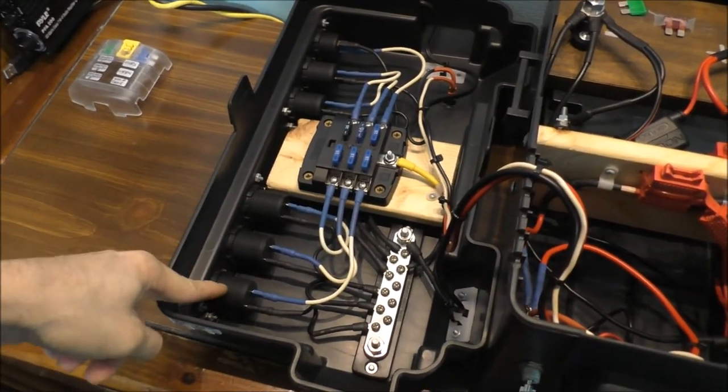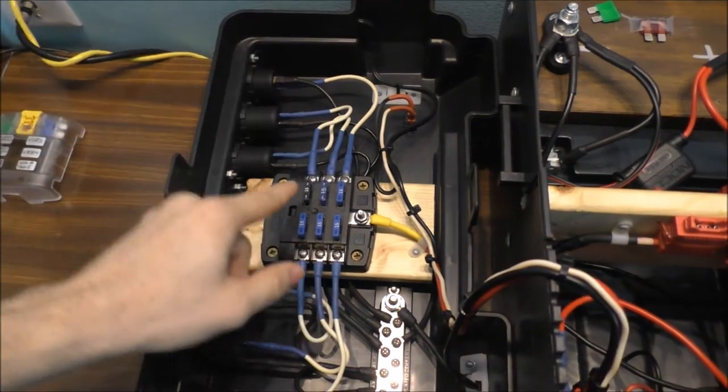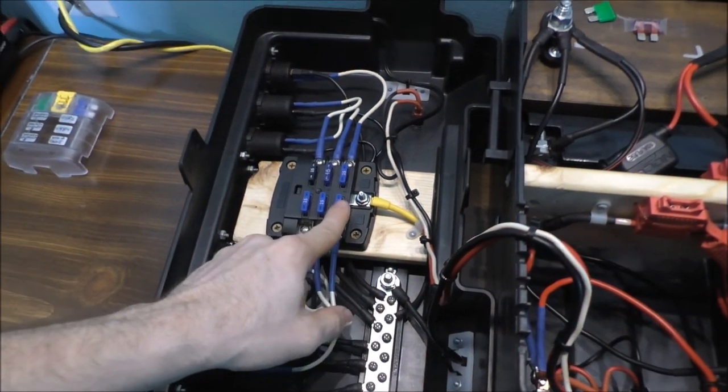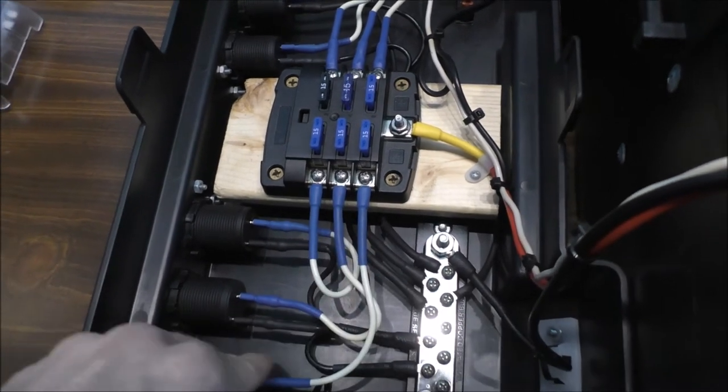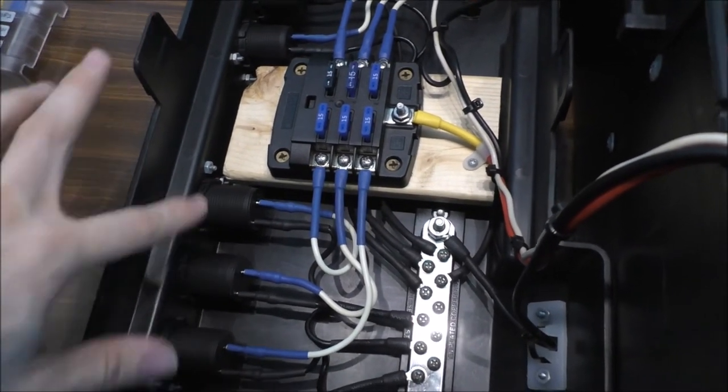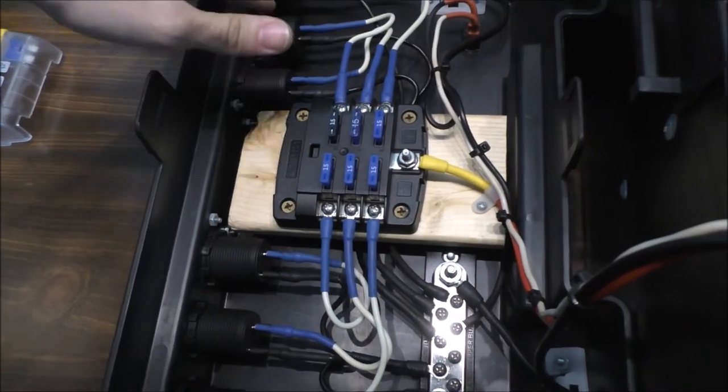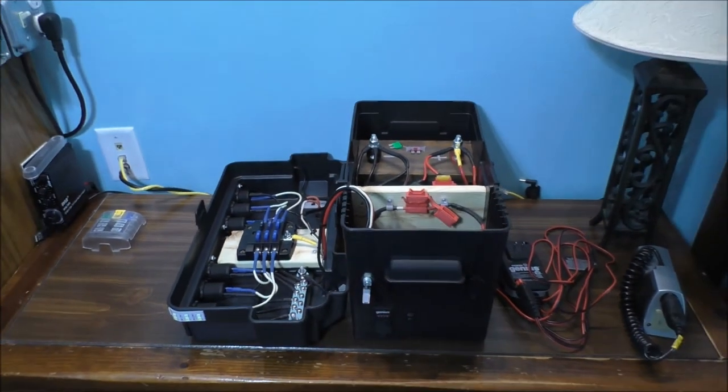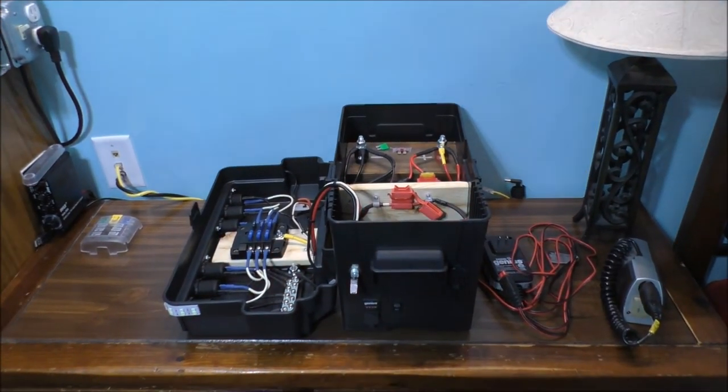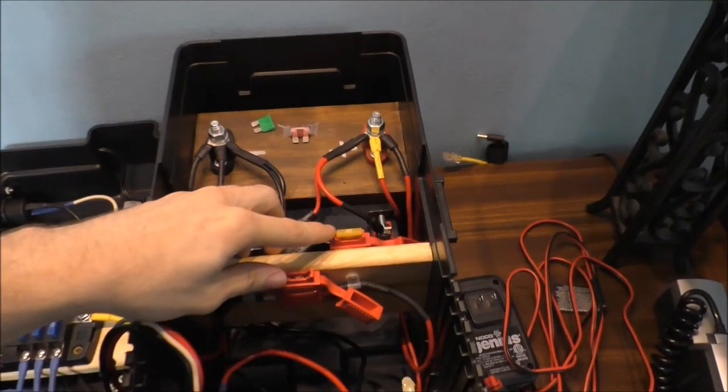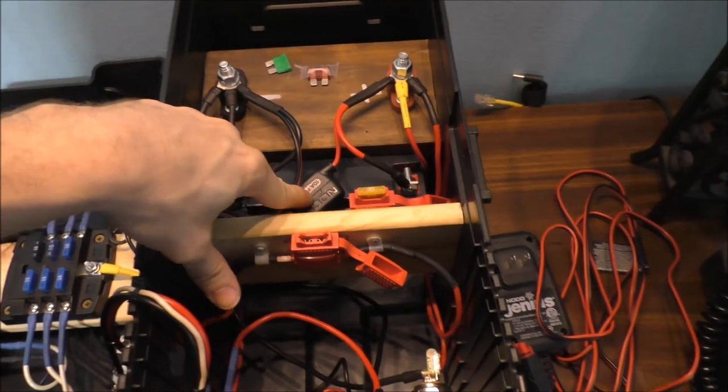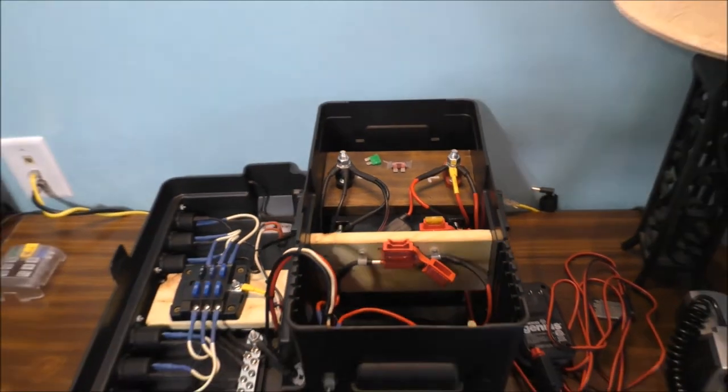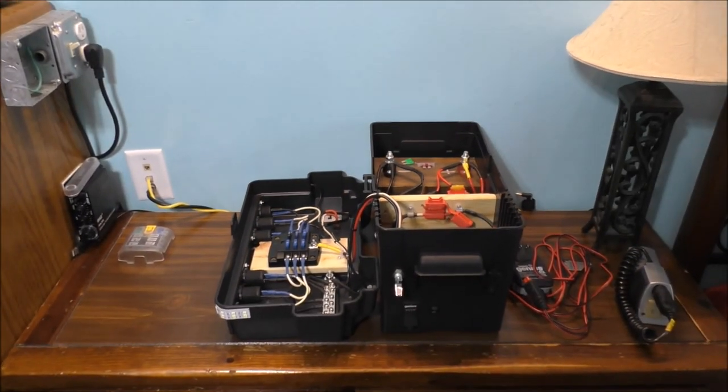Now, each of these have their own separate fuses, all 15 amp fuses. Like this cigarette outlet, this one, this one, and these USBs. And everything is pretty good with this unit. And that's why I have a 20 amp fuse for this cigarette outlet and a 10 amp fuse for this charging circuit. It's just to give it some protection.